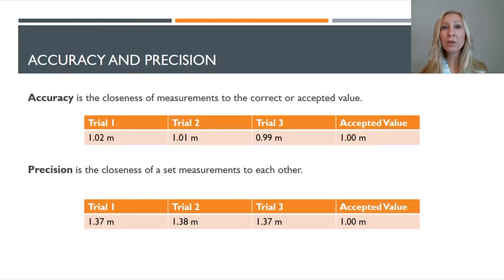And you get 1.37 meters, and then 1.38 meters, and then 1.37 meters. So none of these is anywhere close to 1.00. The average isn't close to 1.00, but they are close to each other. So this experiment has a high degree of precision even though it's not accurate.